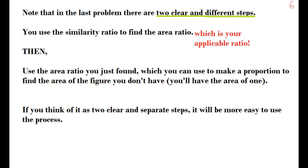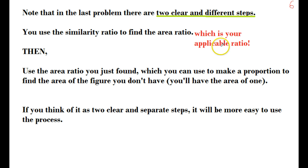Note that in that last problem there are two clear and different steps: you use your similarity ratio to find the area ratio, which was your applicable ratio. The area ratio was applicable because the problem asked you to find one area given another area, so you needed the area ratio.